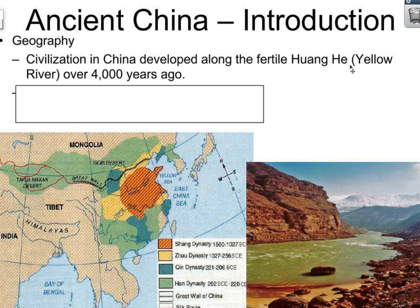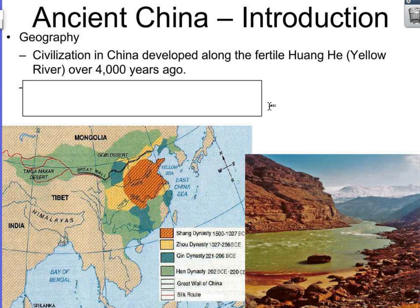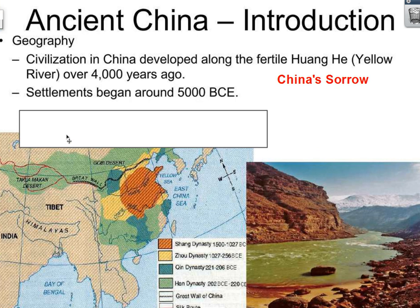Civilization in China developed along the fertile Huang He, sometimes called the Yellow River, over 4,000 years ago. It's nicknamed the Huang He because of the fertile soil that would deposit, which had sort of a yellowish tint to it sometimes. This Huang He River also has another name in ancient China — it is oftentimes referred to as China's Sorrow, because of its pretty erratic flooding that could cause destruction and devastation to the civilization.